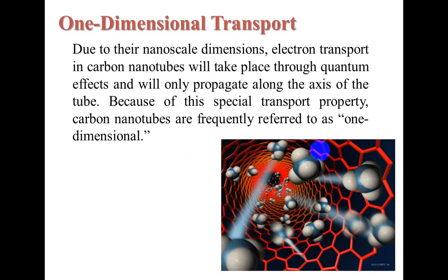One-dimensional transport — due to their nano-scale dimensions, electron transport in carbon nanotubes takes place through quantum effects and will only propagate along the axis of the tube. Because of this special transport property, carbon nanotubes are frequently referred to as one-dimensional.